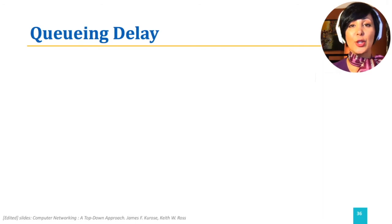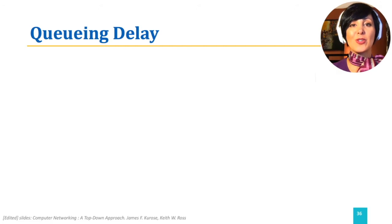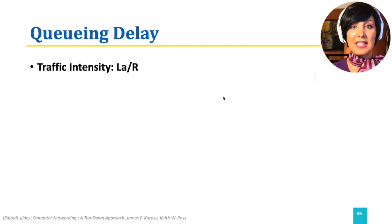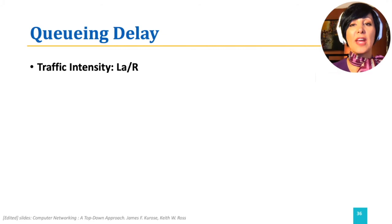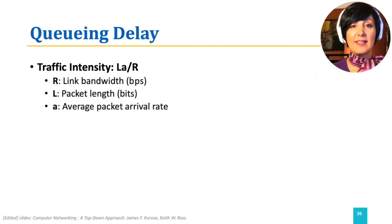At the queue, the packet experiences a queuing delay while it waits to be transmitted onto the link. This delay depends on traffic intensity and the number of packets earlier in the queue waiting to be sent out on the outgoing link.